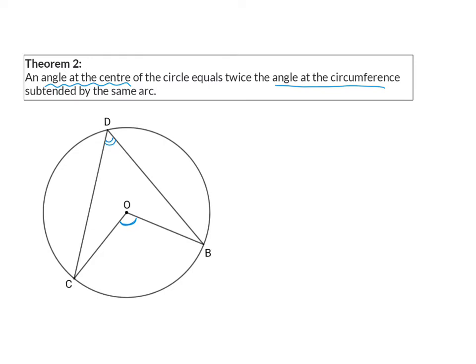Subtended means formed by the same arc. If you look at angle O, it is formed on the circumference by arc CB. If you work from arc CB and want to form an angle on the circumference of the circle, you need to move from C and from B to get back together on the circumference, and that will be angle D.